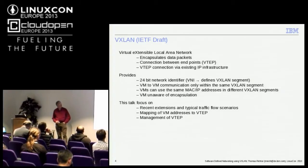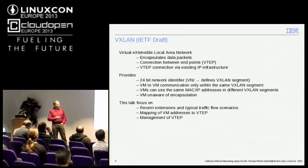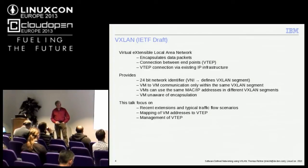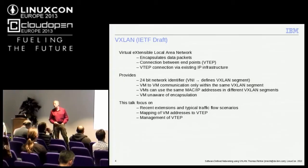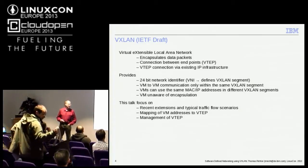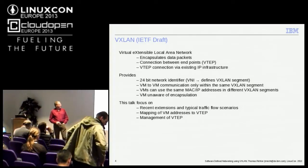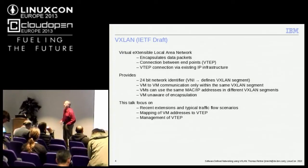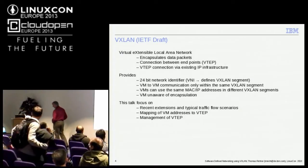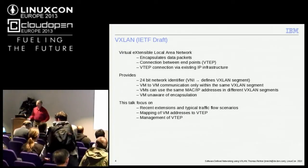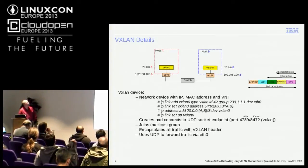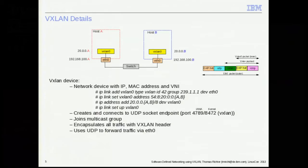I'll focus on the recent extensions and the typical flow scenarios, why we implemented them and put them into the latest kernels. I'll show you the mapping of virtual machine addresses to the destination endpoint, so the virtual machine knows where to send the traffic. And of course, very important is the management of the virtual tunnel endpoints. But first, I have to talk a little bit about VXLAN so that we are on the same page.